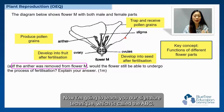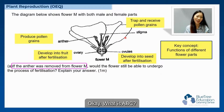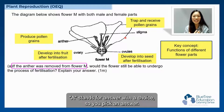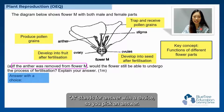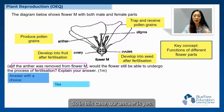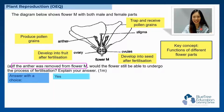I'm going to teach you our signature technique called the ABC. A stands for 'Answer with a choice' — you pick an answer. In this case, our answer is yes.